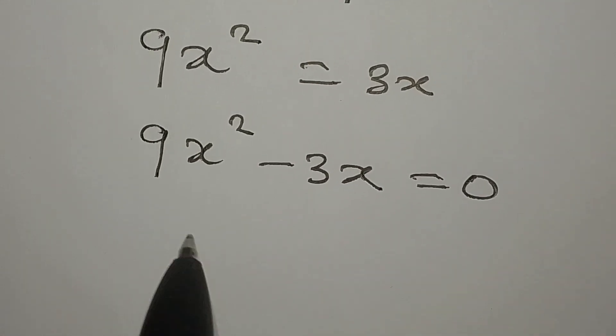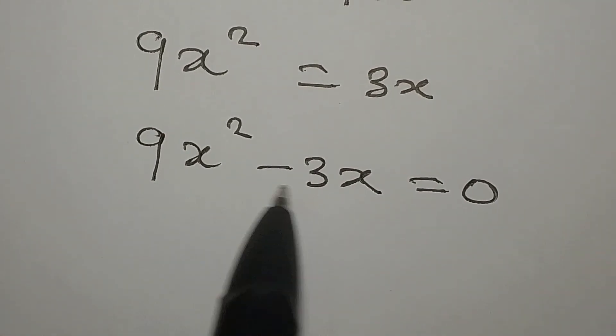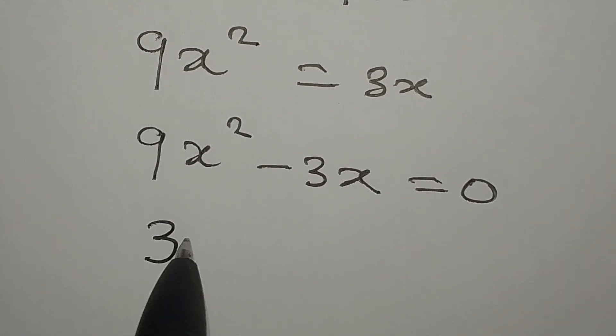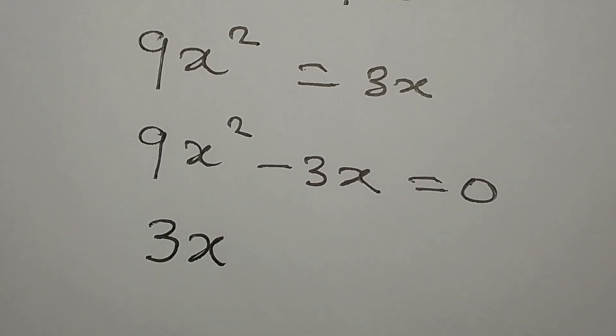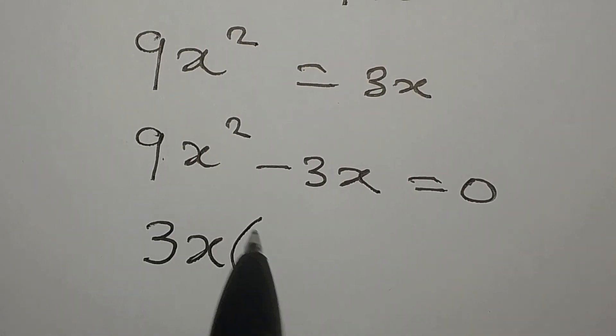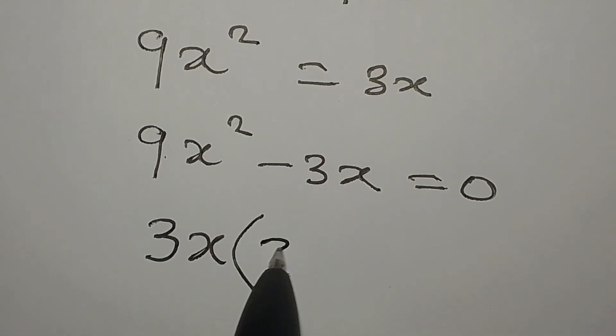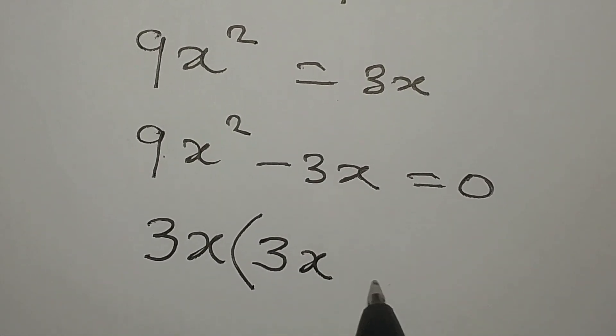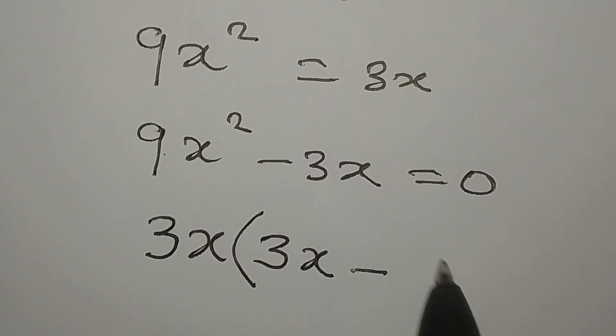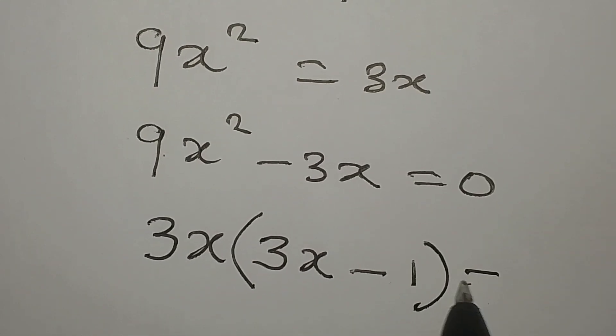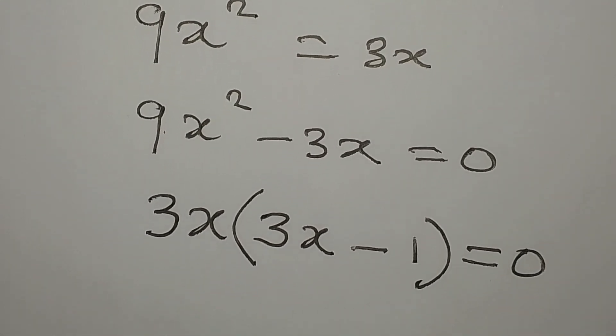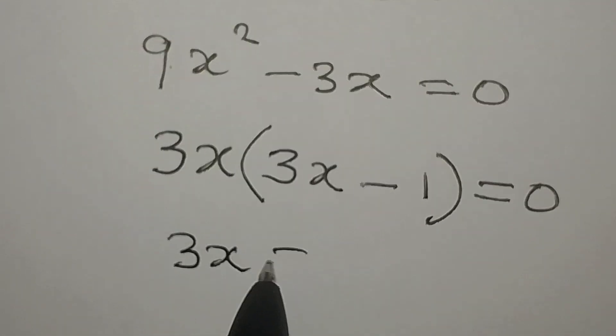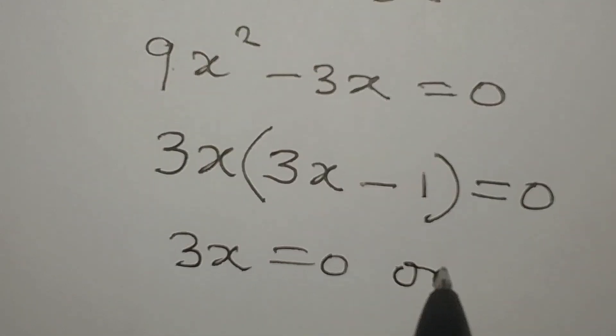And then from here, what can I do? Factor out the common factors. We can get 3x as the common factor, and then 3 into 9x squared is 3x, minus 3x into 3x is 1, and this equals 0. So either 3x equals 0 or 3x minus 1 equals 0.